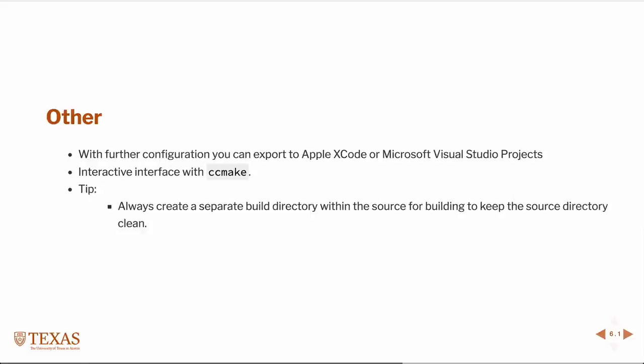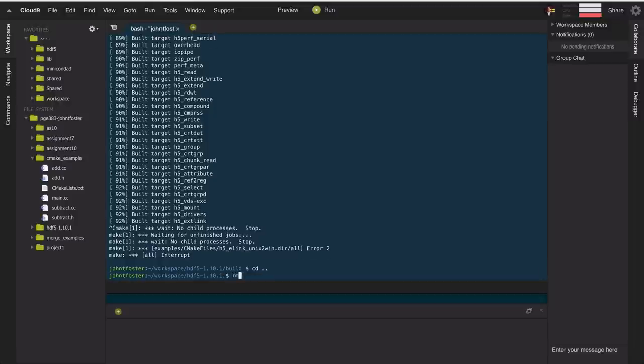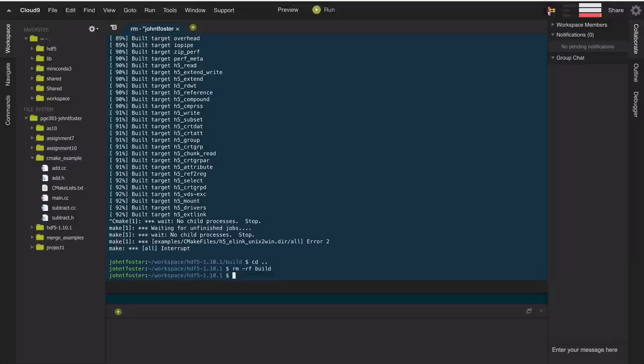Returning to our slides — a couple of other tips. With further configuration, you could export to Apple Xcode or Microsoft Visual Studio projects. We saw briefly how to use the interactive ccmake to find the correct environment variable names. It's important to always create a separate build directory to keep the source code clean. If you don't, all the object files clutter the source; with a separate build directory, you just remove it and you're right back where you started, freeing up hard drive space.